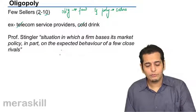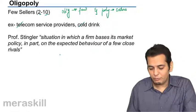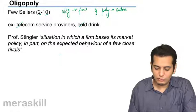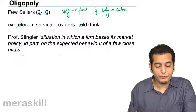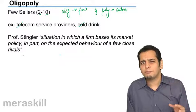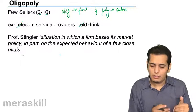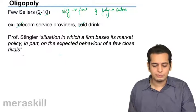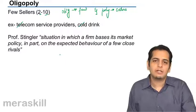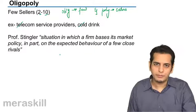In the words of Professor Stigler, oligopoly is a situation in which a firm bases its market policy in part on the expected behavior of a few close rivals. So oligopolistic competition is a situation where a firm chooses its policies based on the behavior of its rivals, that is, the behavior of the competitors.